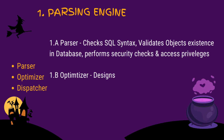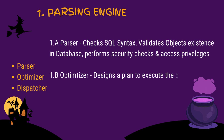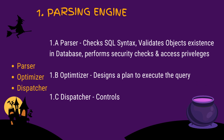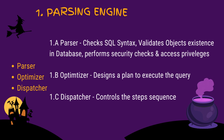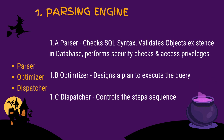Point 1B — Optimizer: This develops the least expensive plan to return the requested answer set to the client. Point 1C — Dispatcher: This controls the sequence of steps executed and passes them to the next module, the Message Passing Layer.